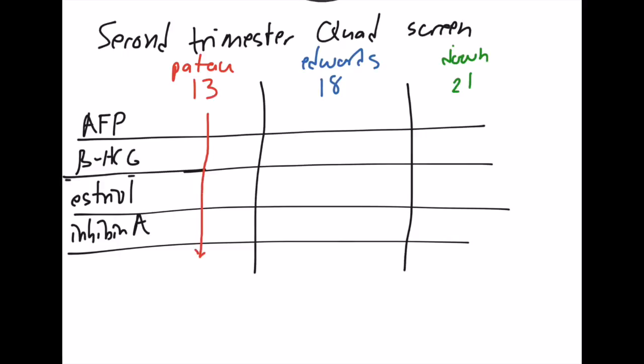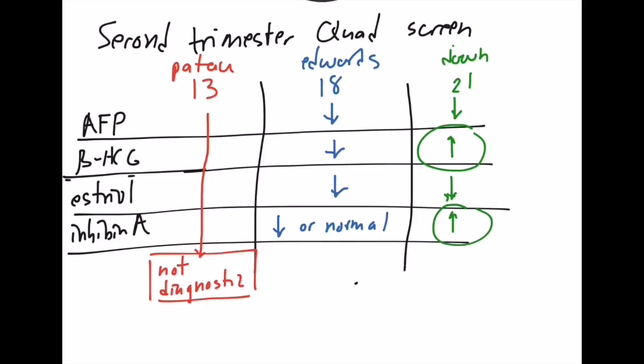Let's look at Patau. The quad screen is not useful diagnostically for Patau, so you're not going to use it. This is really only good for differentiating between Edwards and Down. You're going to have everything down in Edwards. The inhibin will be down to normal. In Down, you're actually going to have an increased beta HCG and an increased inhibin A. That's how you can tell the difference between the two.